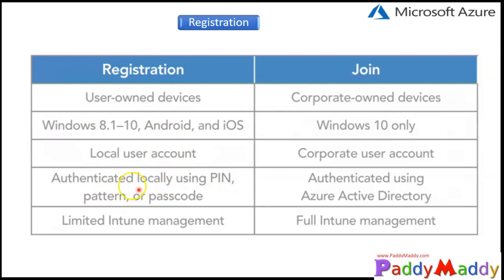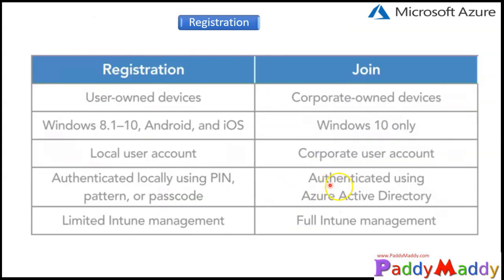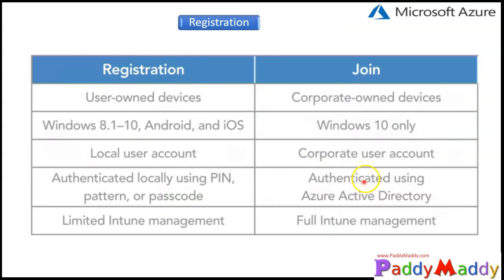Authentication for registered devices happens with a PIN, pattern, or passcode set by the end user — not by your corporate identity management server. For Azure AD Joined devices, support starts from Windows 10, and only corporate users will be able to log into the device. The user's account comes from Azure Active Directory, so they use their Azure AD user ID and password to log in. Authentication is fully managed by Azure Active Directory or your on-premises Active Directory.